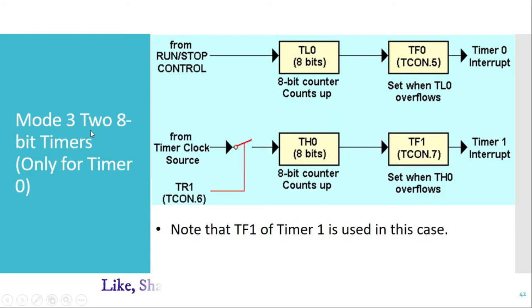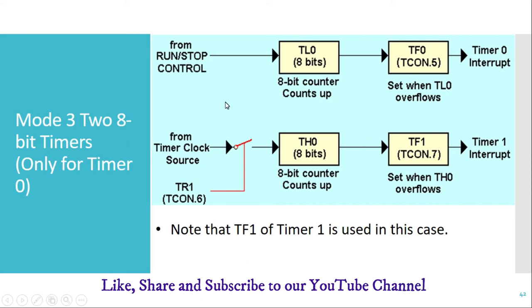Mode 3 is two 8-bit timers and is available only for timer 0 — the first three modes are also available for timer 1, but mode 3 is exclusive to timer 0. In this mode, the timer is split into two parts. TL0 is the lower part with overflow flag TF0, and TH0 is the upper part with overflow flag TF1. TF1 is normally used by timer 1, but in this mode it is used by timer 0, so both parts can be operated separately.